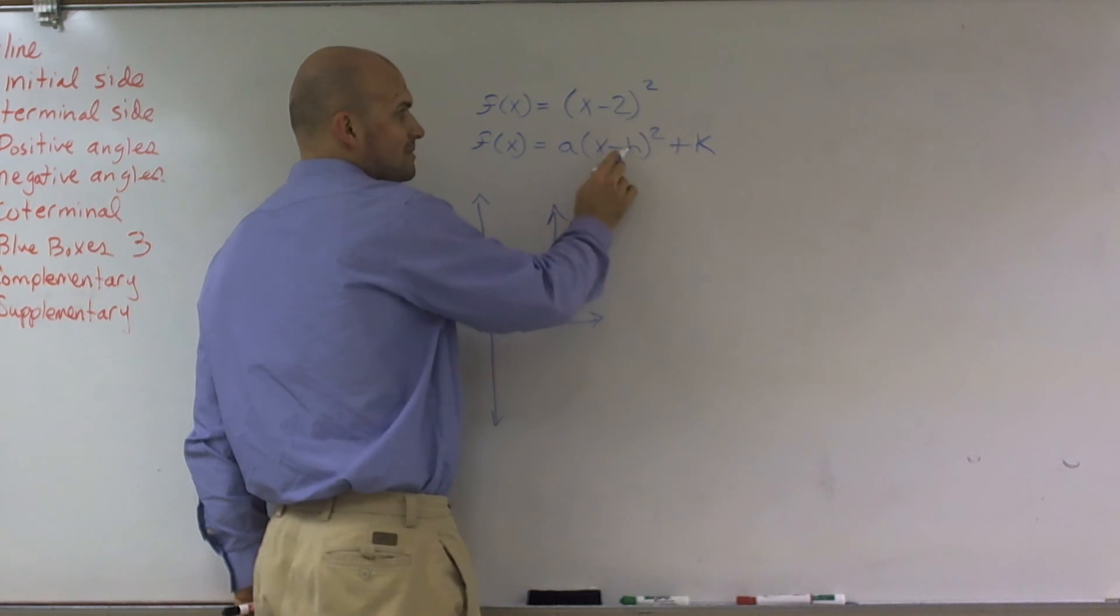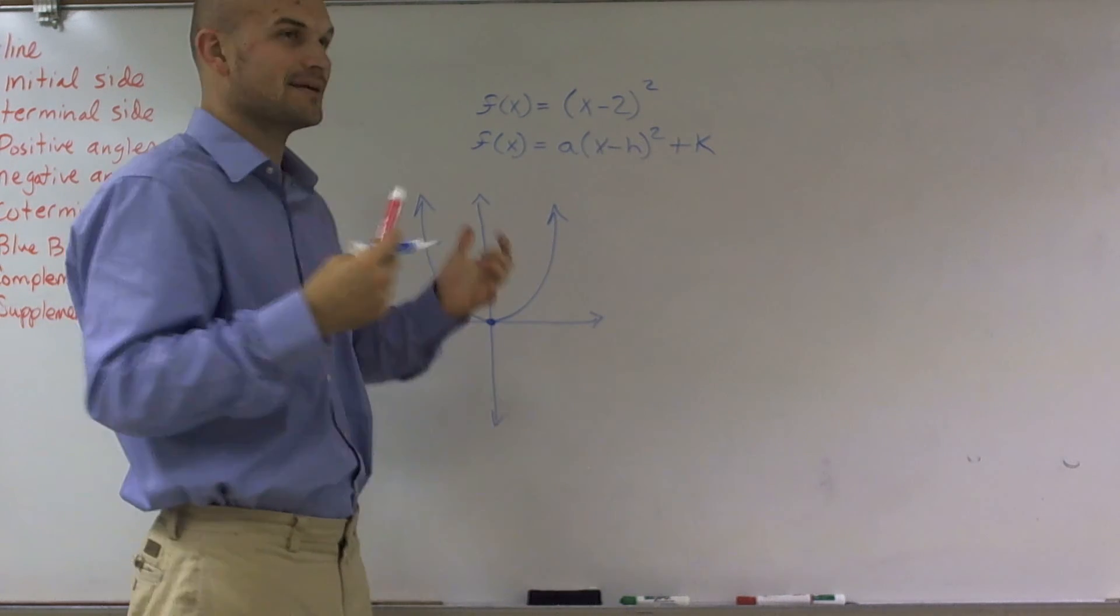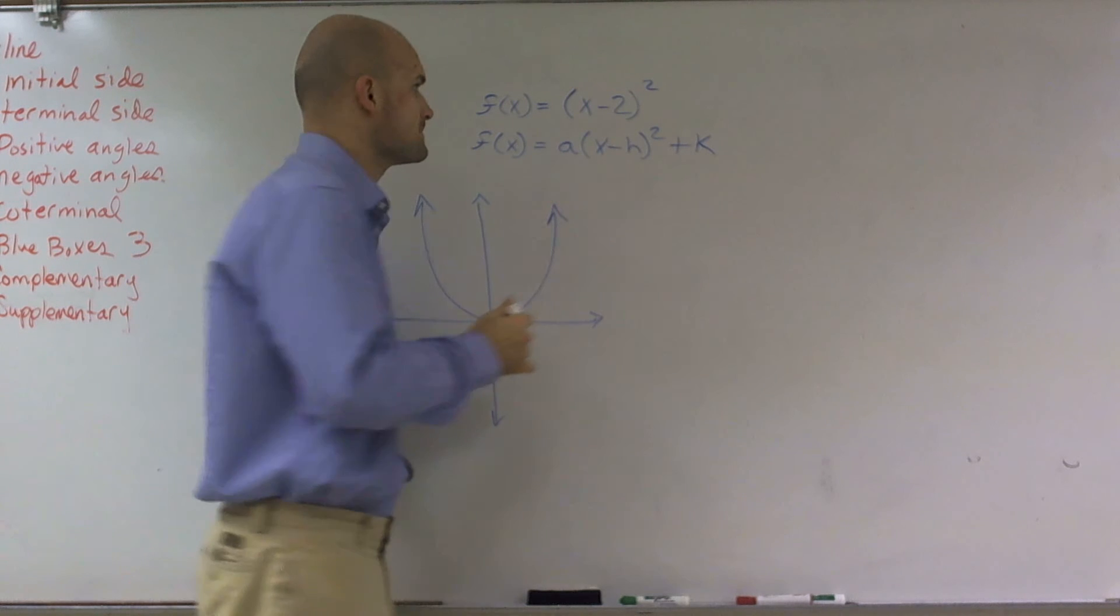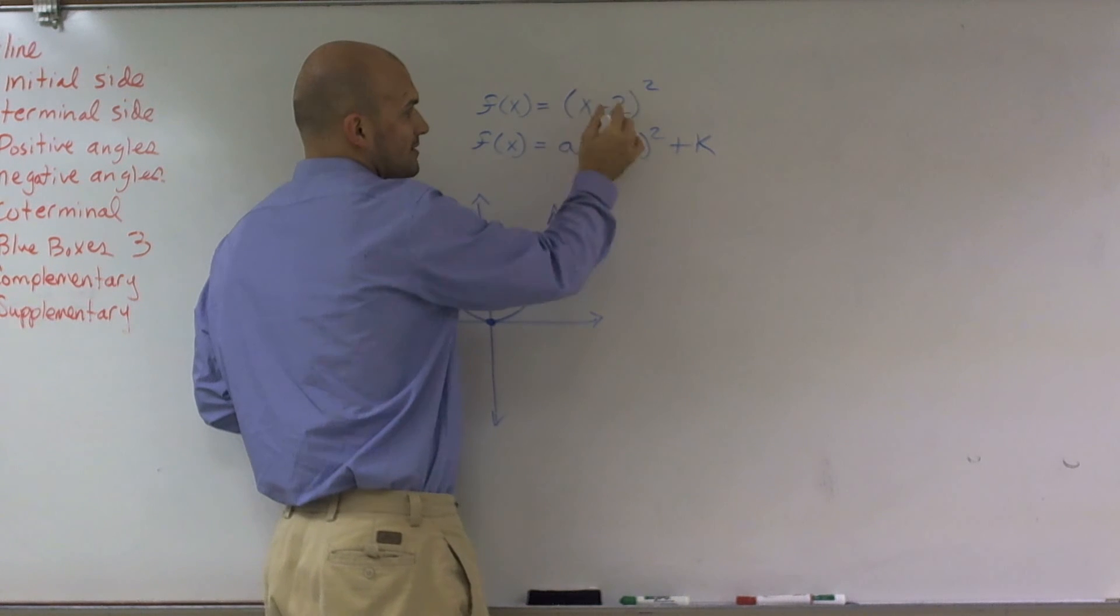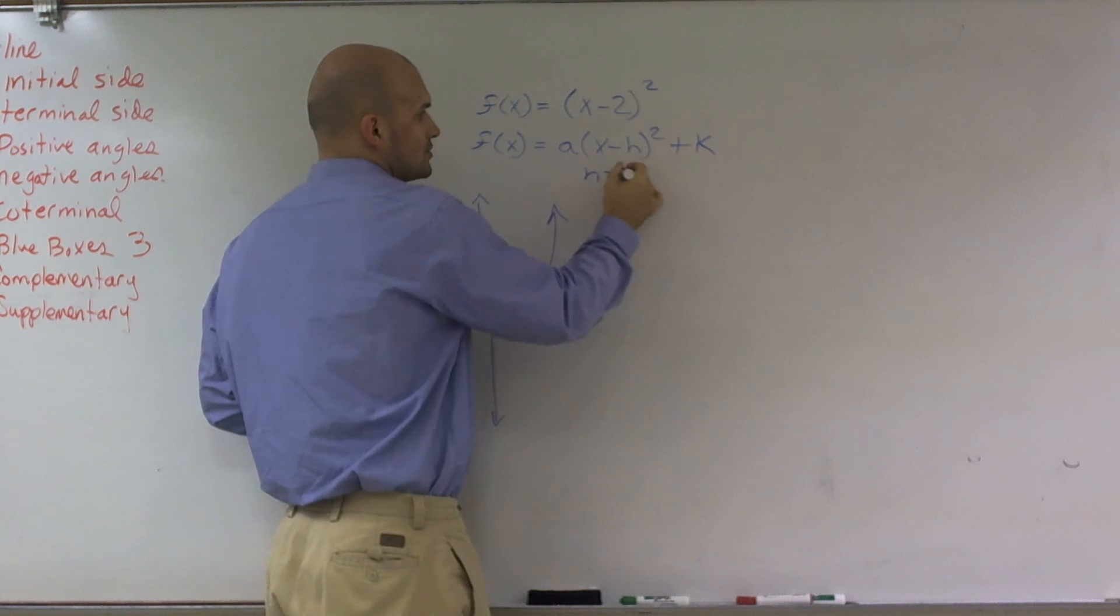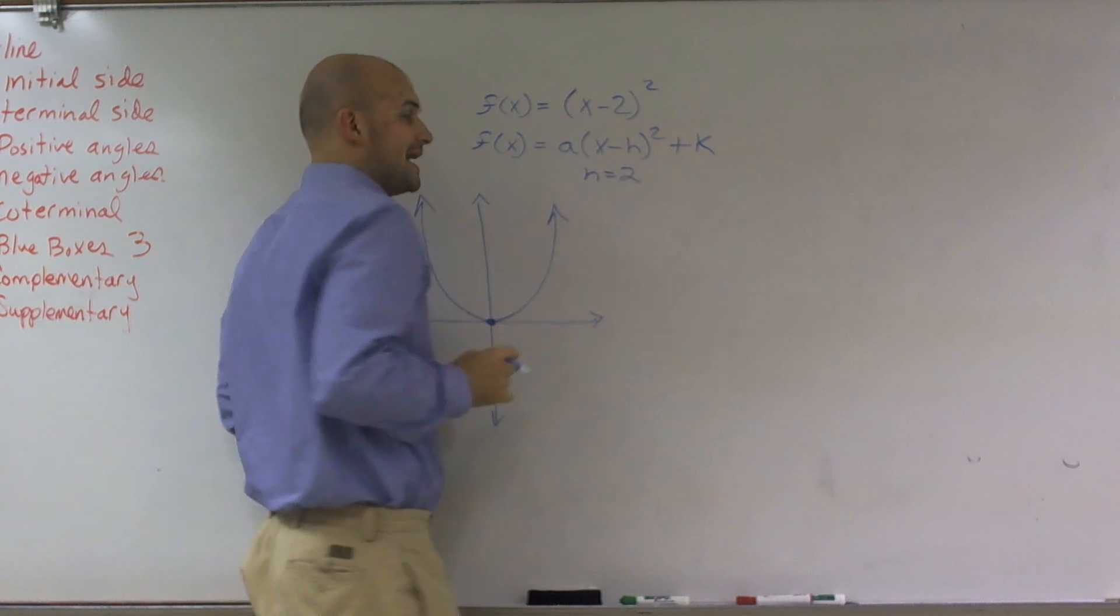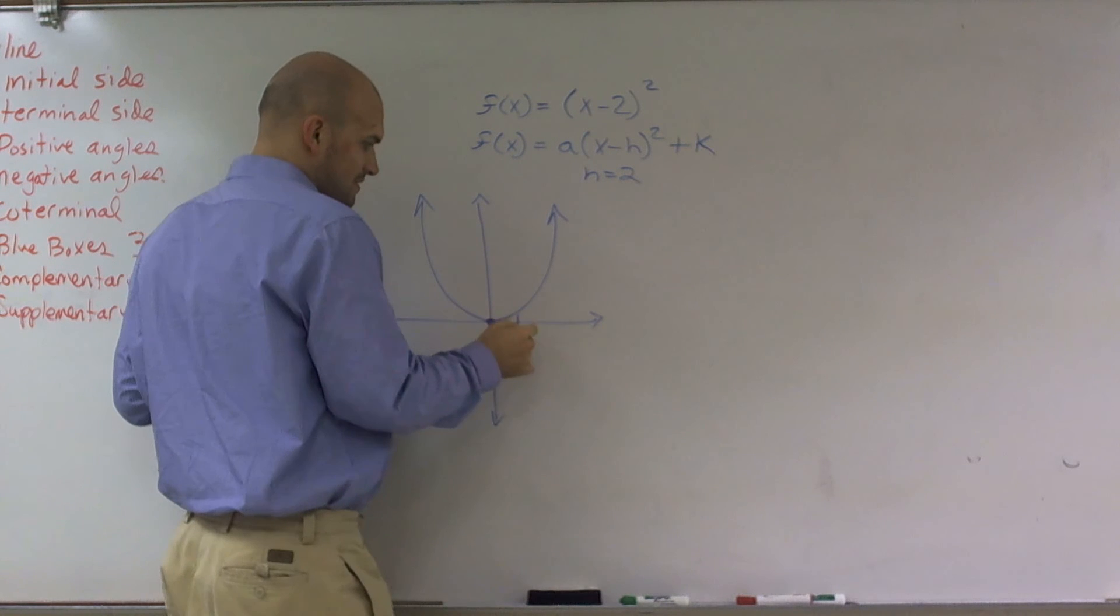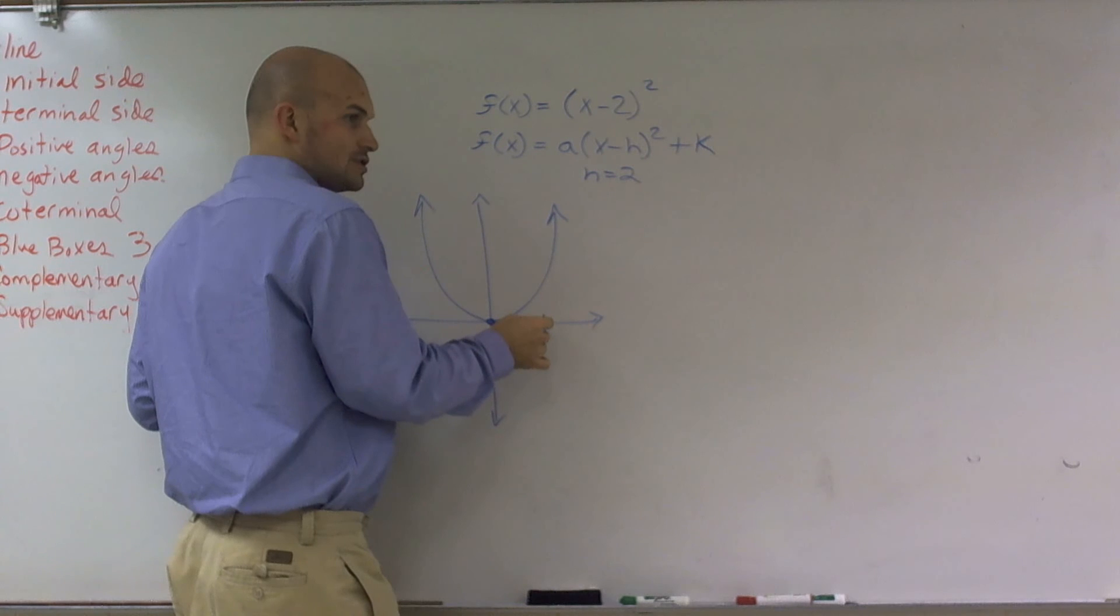I have a minus 2, so that's going to tell me my h is going to be – I actually have a – if you think about this, I know it's kind of confusing, but it's x minus h, right? So really, my h is equal to 2, because it's x minus 2, x minus h. So therefore, h is equal to 2. That means I'm going to shift 2 to the right. So I'm going to shift over 2 to the right.